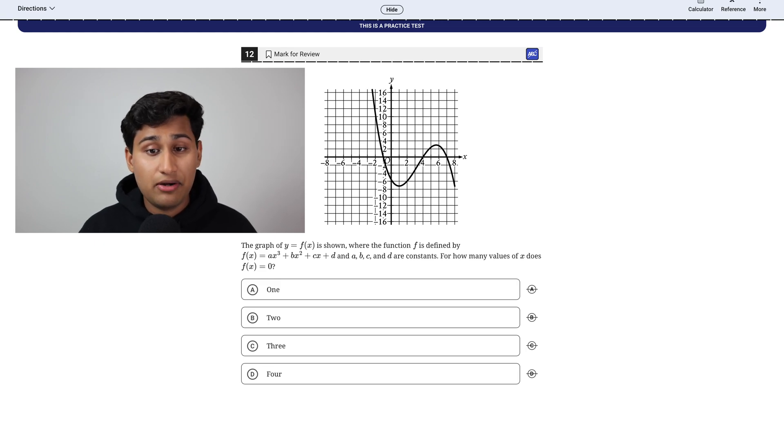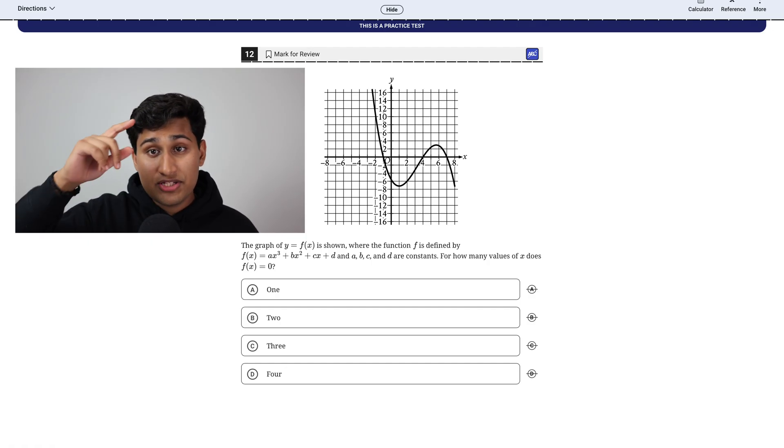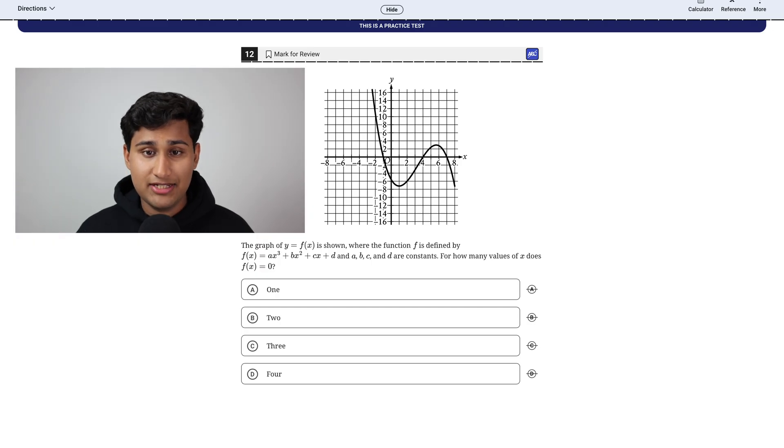For example, this question is asking for how many values of X does F of X equals zero. And if you know, you can always substitute F of X with just Y. So it's asking, when is Y zero? So basically, when does that graph cross the X axis? Because when it's on the X axis, it's zero points up or zero points down. So it's Y equals zero.